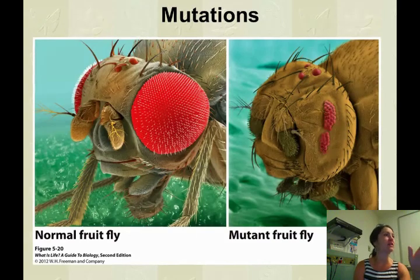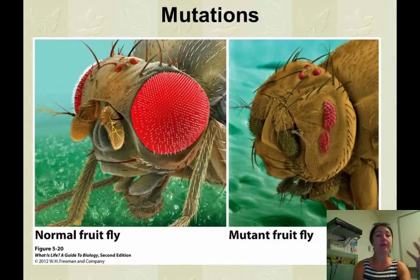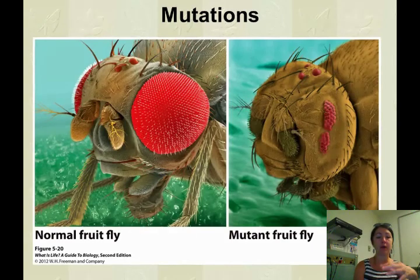So if you think about this in terms of fitness, being able to survive, the normal fruit fly is going to be able to see everything it needs to see. It's going to be able to react to its environment.